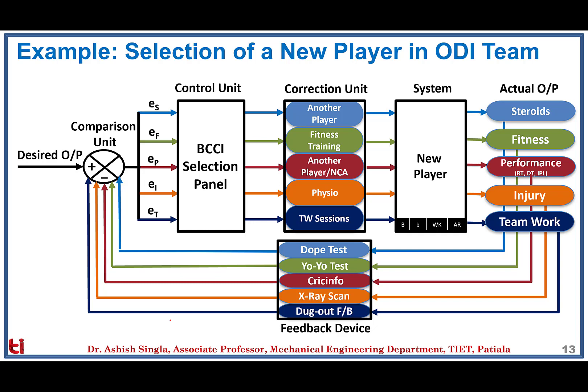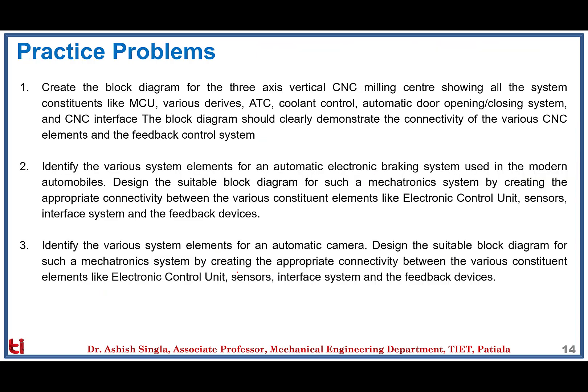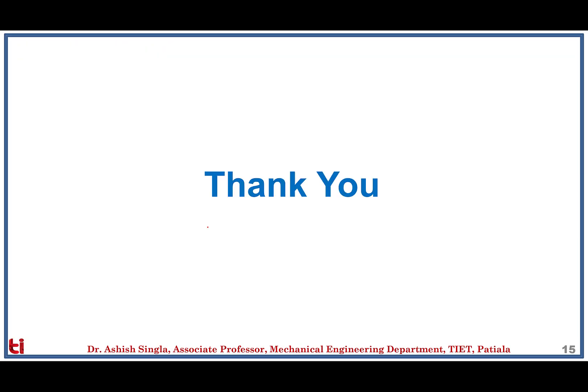This illustrates a closed loop control system where different colors represent one single cycle, each based on one output, its sensor, and its correction unit. You can try practice problems from the last couple of slides, making similar block diagrams. Thank you.